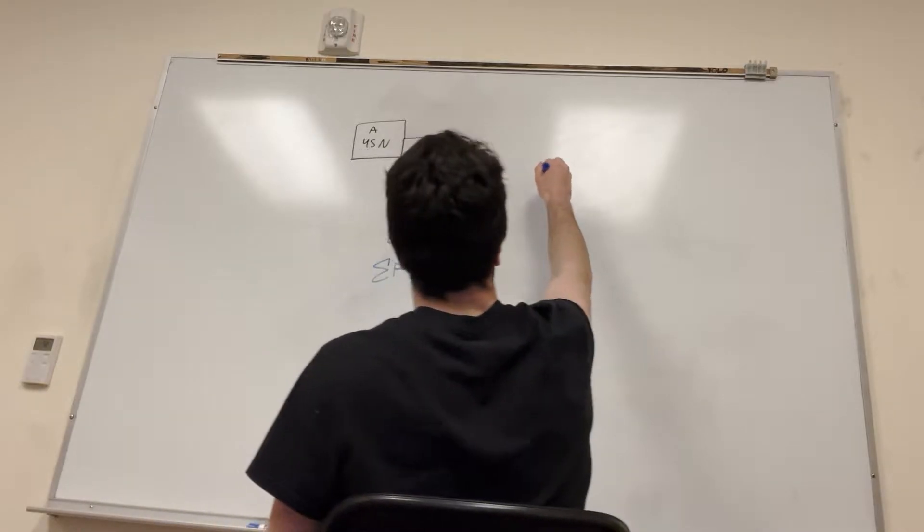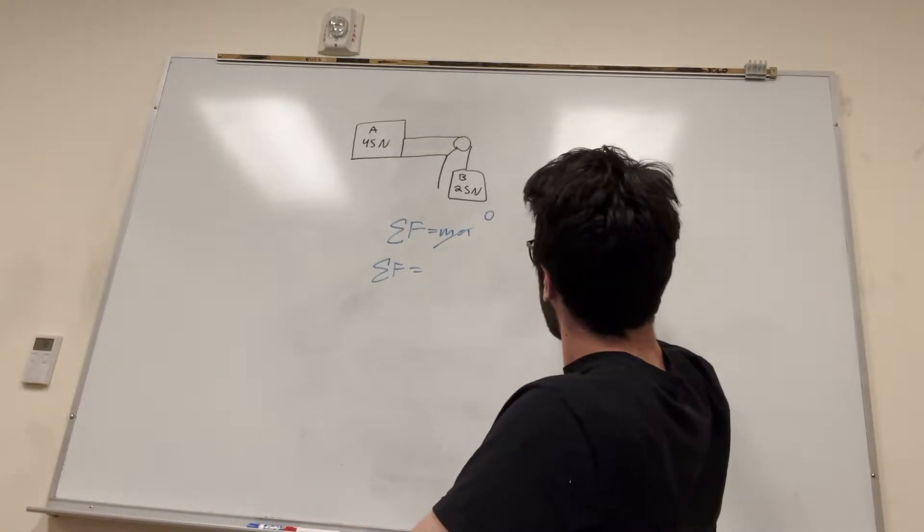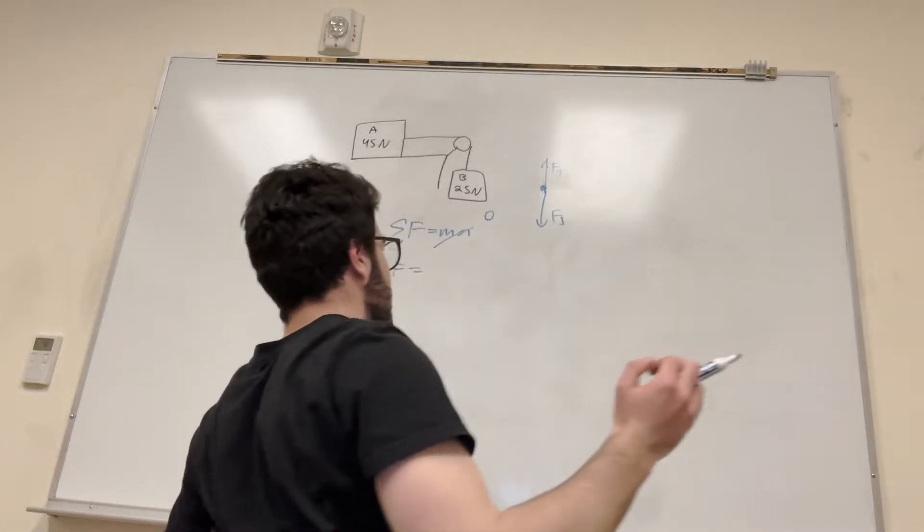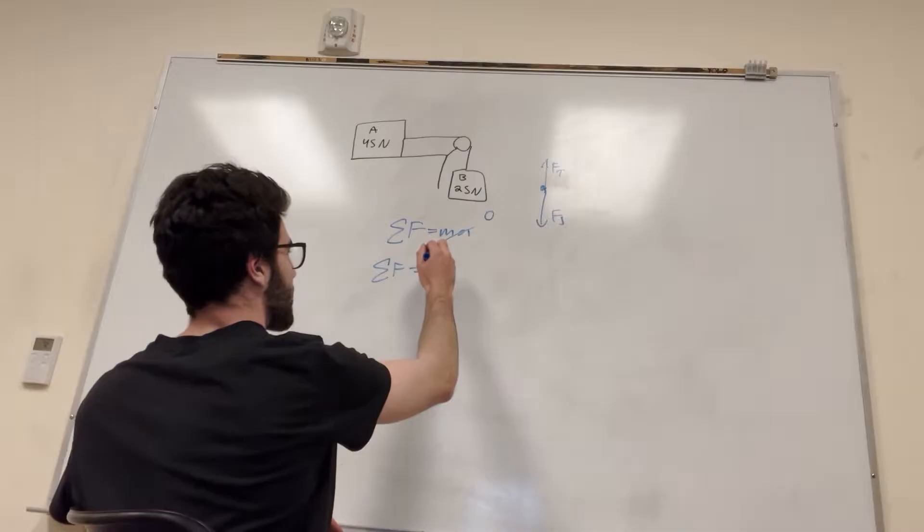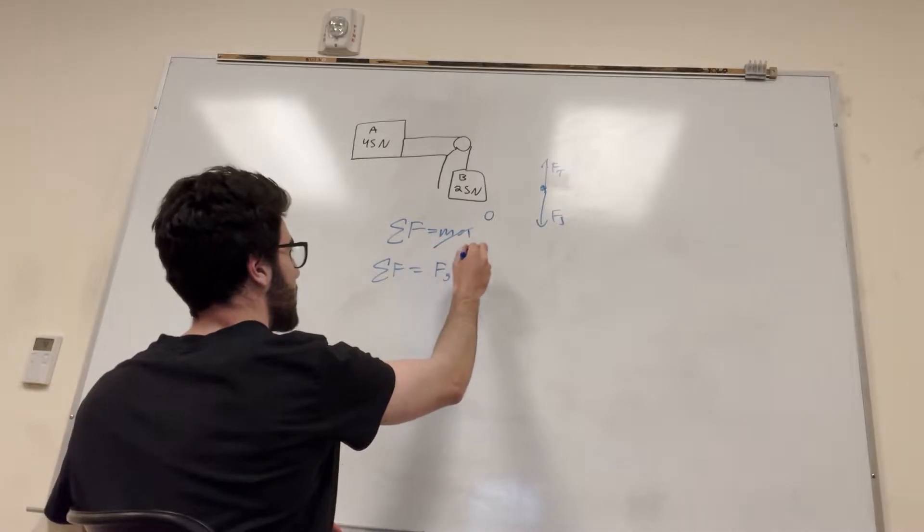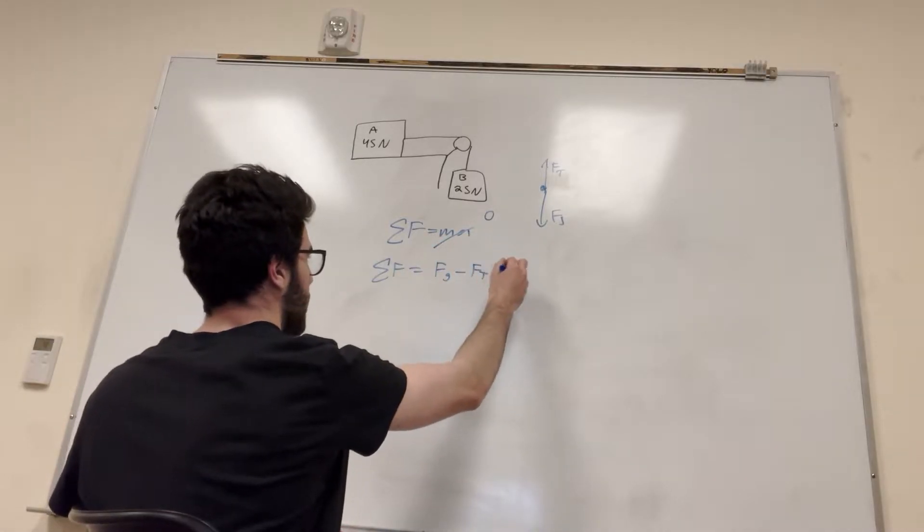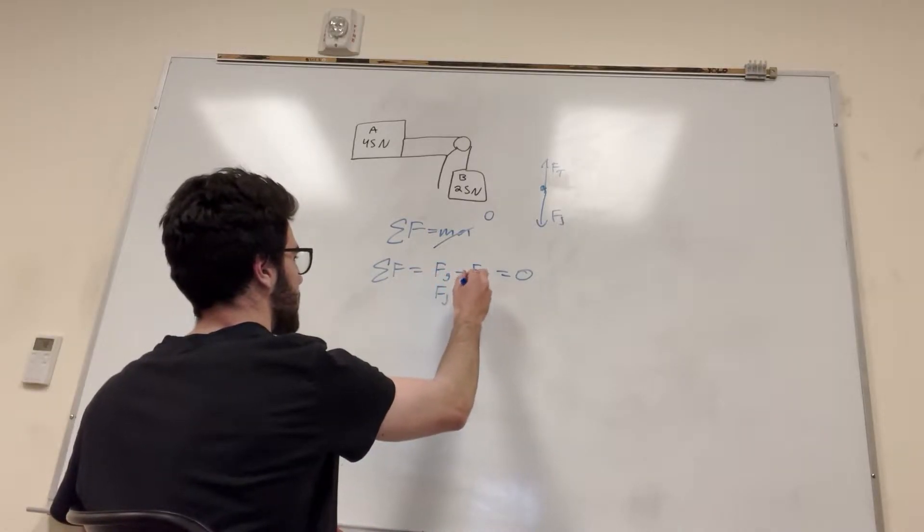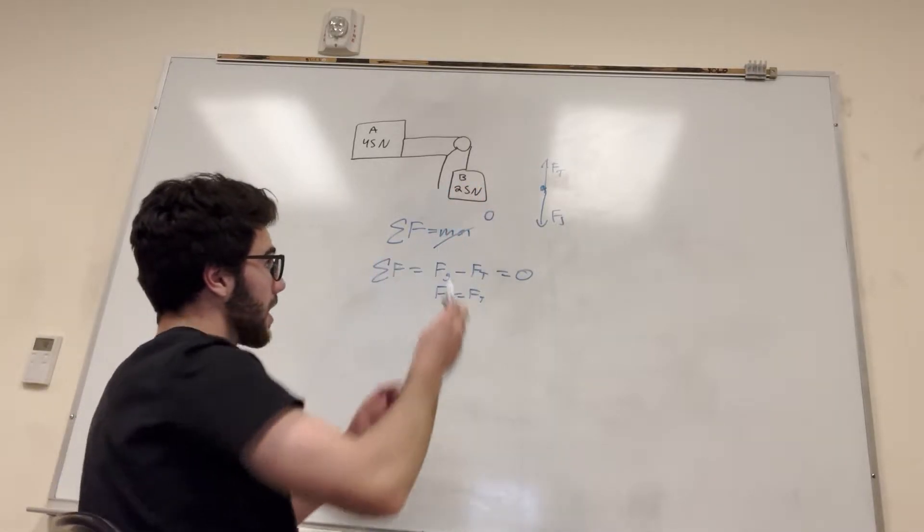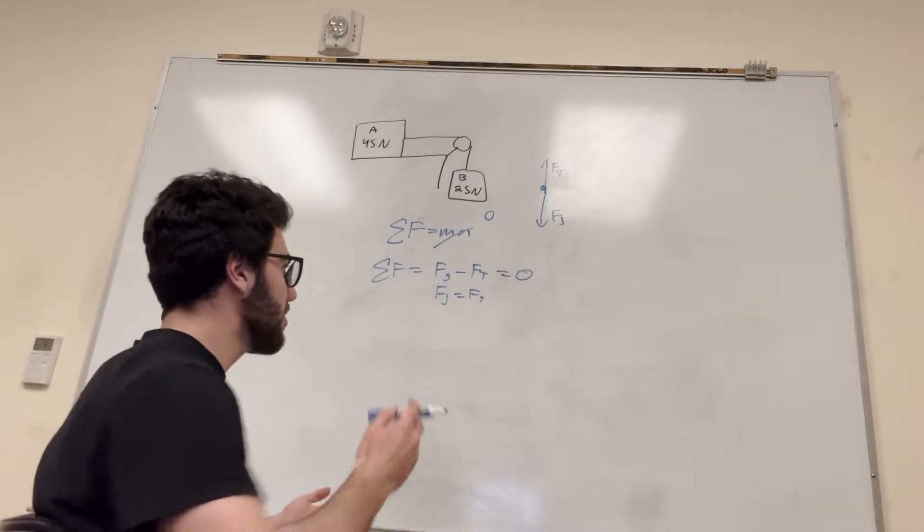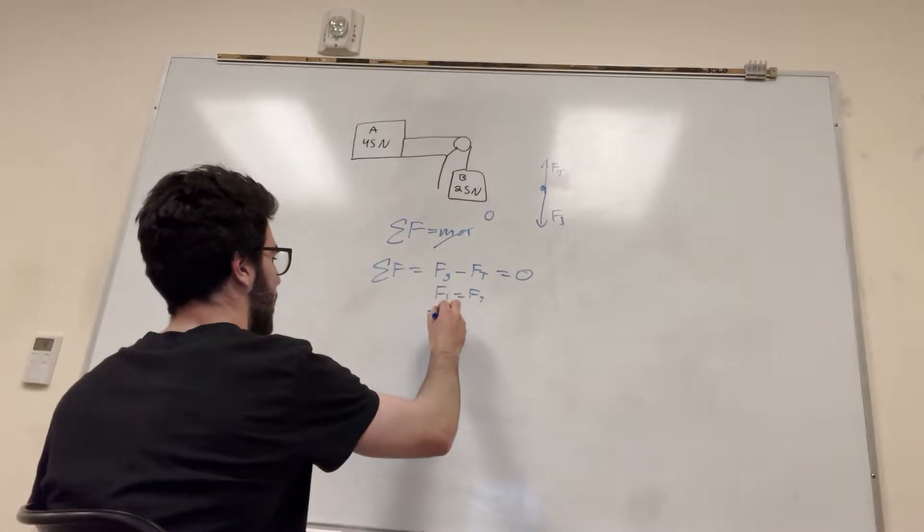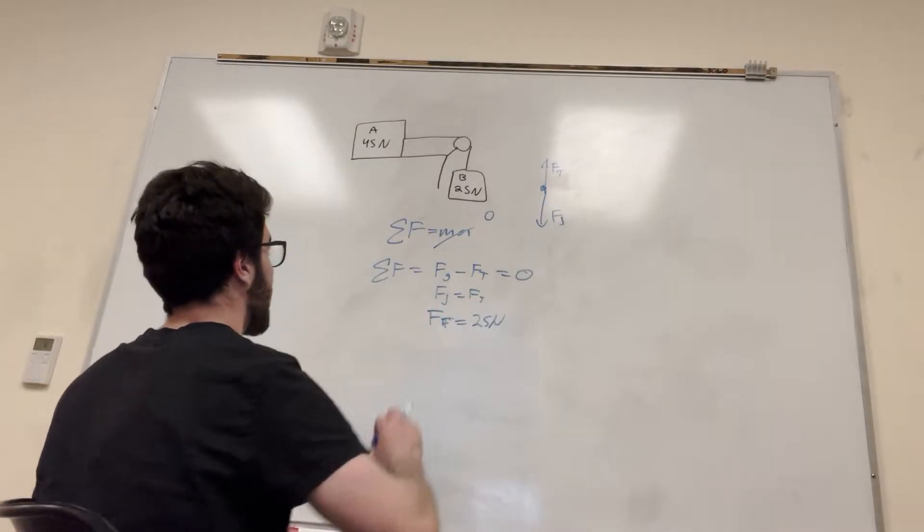They're gonna be equal to each other. That's all you need. Okay, so it's gonna be force of gravity minus force of tension. It's gonna be equal to zero, right? Okay, so you can say force of gravity is equal to force of tension. We know that the force of gravity on this is 25 newtons because it's 25 newtons, so the force of friction or tension, I don't know why I said friction there, is equal to 25 newtons. Okay, great.